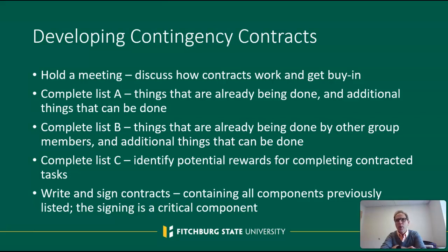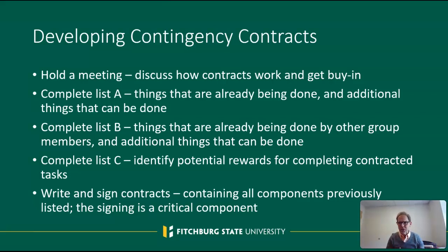The contract specifies who is going to do what, to what degree, when they're going to do it, what is going to be provided for reinforcement, how it will be judged whether the person earned the reward, when the reward will be delivered, and how much. The signing is a critical component — the person whose behavior is being targeted signs it, but also the person judging and delivering reinforcement and anyone else playing a role in implementation signs it as well, acknowledging they agree to do what the contract calls for.